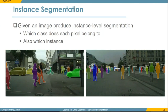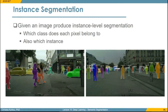In instance segmentation, we have bounding boxes giving instance-level discrimination of objects that belong to the same class, and we also get pixel-level information with a different color for each different object. This process merges detection with bounding boxes and semantic information at the pixel level. Note, however, that we do not get any information about background areas — only for objects we're interested in detecting.